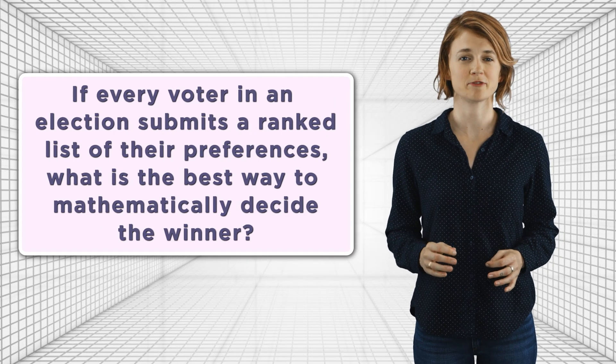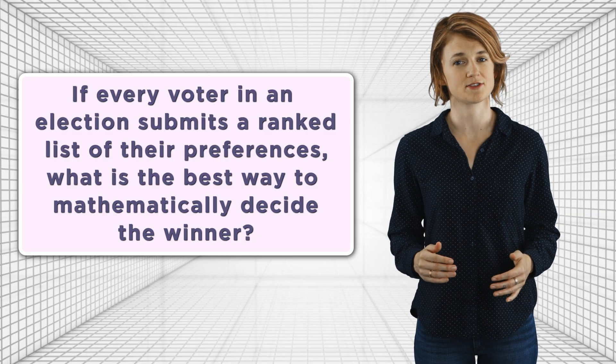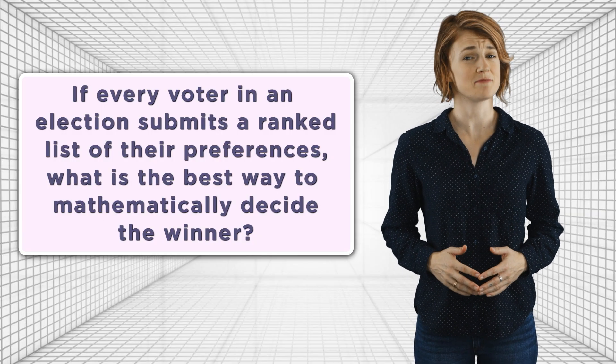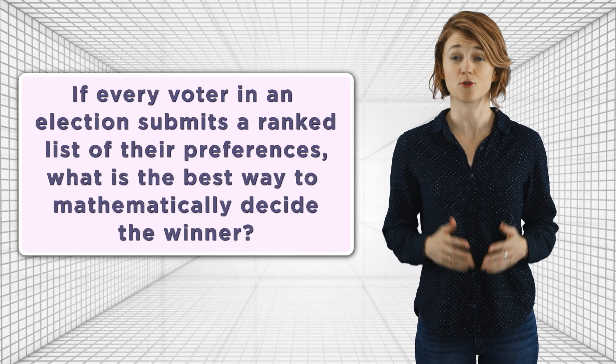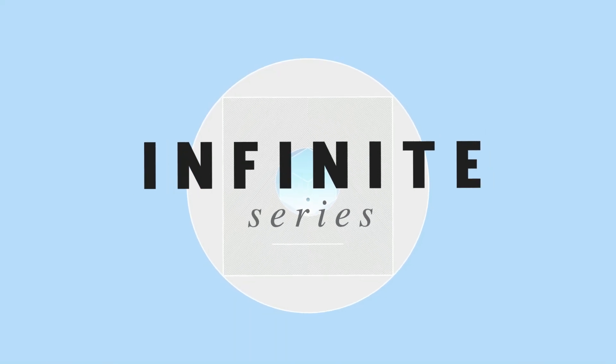If every voter in an election submits a ranked list of their preferences, there are no ties and all the candidates are ranked — what is the best way to mathematically decide the winner of the election? With access to a complete set of ranked ballots, which means we know every person's opinion, it seems like a clear winner should emerge, but it doesn't. The outcome of the election depends critically on what process you use to convert all those individual preferences into a group preference.